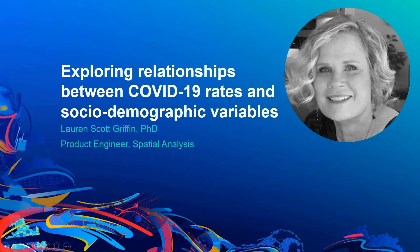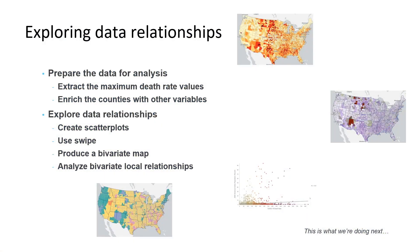We're going to switch gears and look at data relationships. Before we can get started, we need to do a little data prep to summarize the COVID-19 data. We're going to be collapsing the time dimension in the data to get the final COVID-19 death rate per 100,000 people for each county. Once the data is summarized, we use the Enrich tool to get other county-level data, then create scatter plots, use swipe to compare two maps, create a bivariate map, and use spatial statistics to identify statistically significant local relationships.